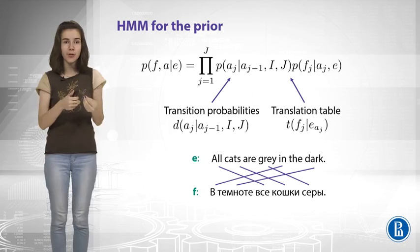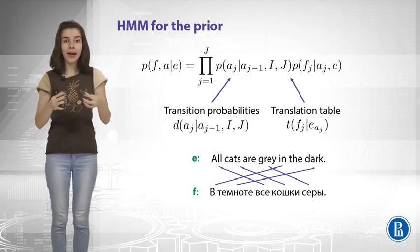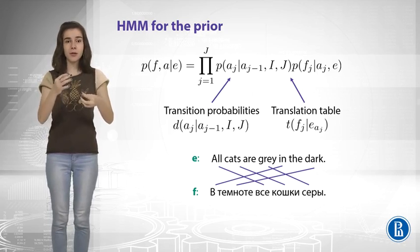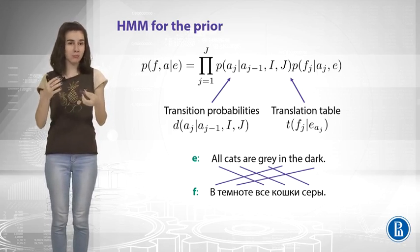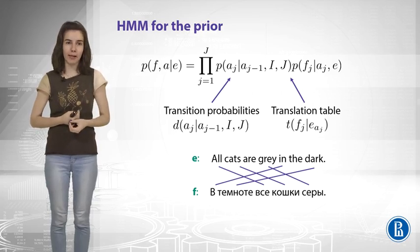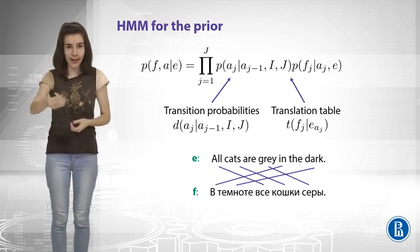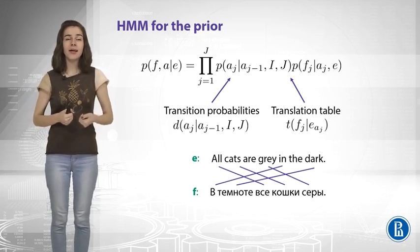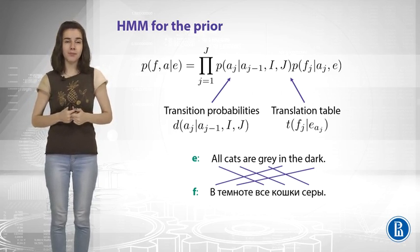It means that you need to learn this and to use this information. That the previous word was aligned to position 5. And maybe that means that the next word should be aligned to position 6. So this is what hidden Markov model can make for you. So you model the probability of the next alignment, given the previous alignment.